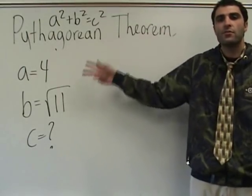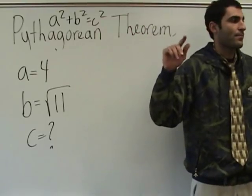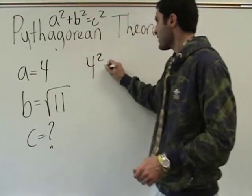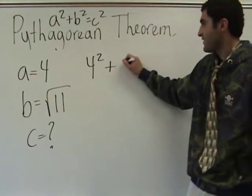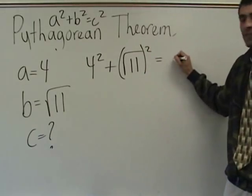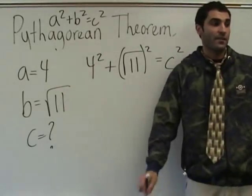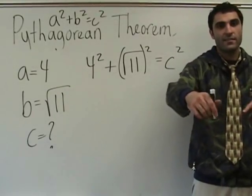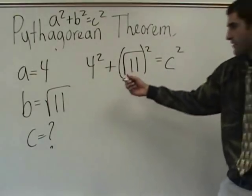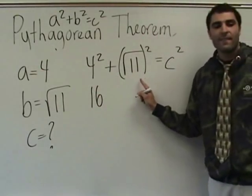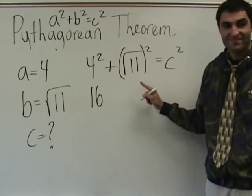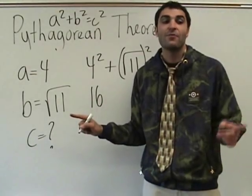We know the formula, we have two sides. Who can set it up? Four squared plus the square root of eleven squared, which would just be eleven, equals C squared. So it's 16 plus... what is square root of 11 times square root of 11? Square root of 121, which is 11. So 16 plus 11 equals C squared.